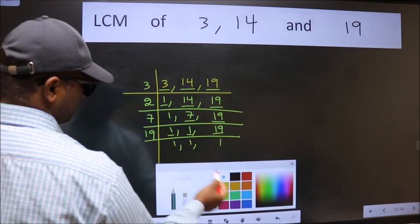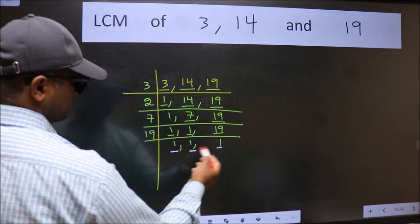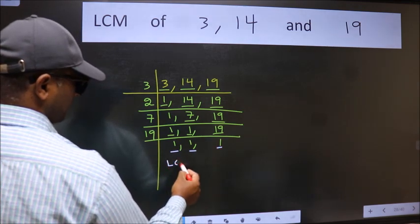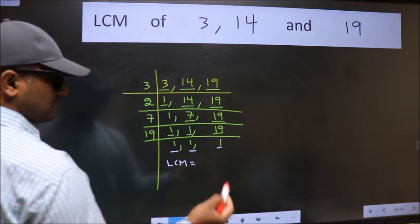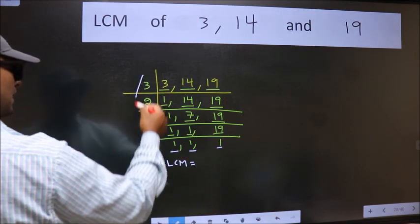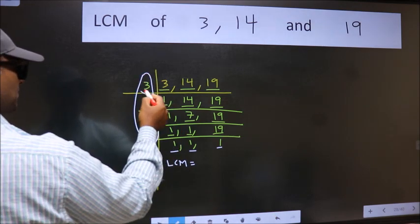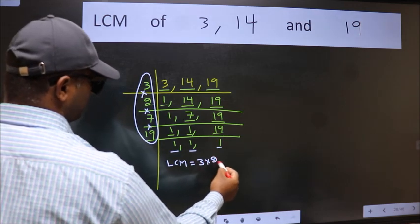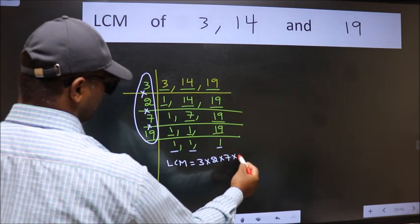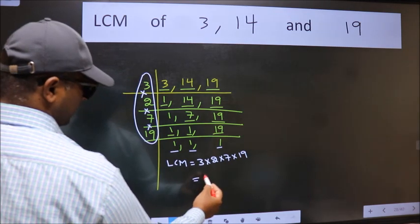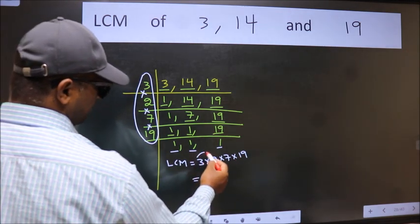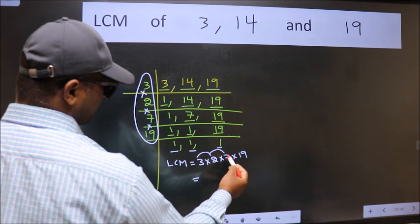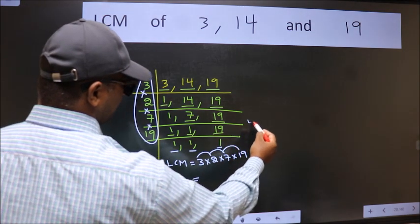So we got 1 in all the 3 places. So our LCM is the product of these numbers that is 3 into 2 into 7 into 19. Let us multiply these numbers. 3 into 2, 6 into 7, 42 into 19.